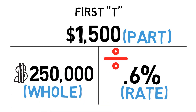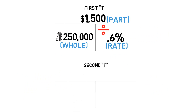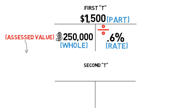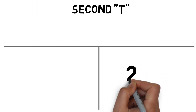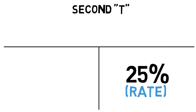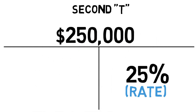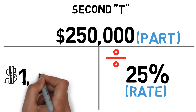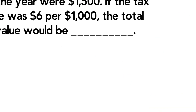Now for our second T, we have the assessed value of two hundred and fifty thousand dollars, which represents twenty-five percent of the total value. So twenty-five percent goes on the bottom right, and the assessed value of two hundred and fifty thousand goes on top as the part. Dividing: two hundred and fifty thousand divided by twenty-five percent gives us the total market value of one million dollars. One million dollars is our answer.